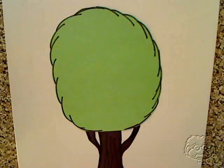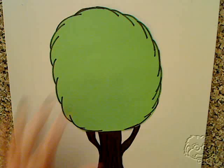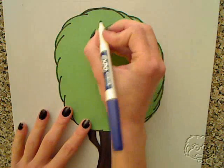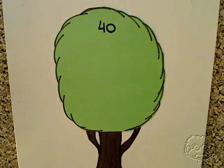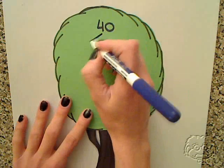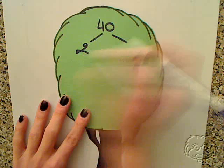So let's look at our tree right here. We're going to do the prime factorization of the number 40. You take the number 40 and you place it on the top of your factor tree. Now you look at your number and you decide what can you divide this number by. 40 can be divided by 2 and 20.